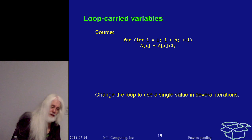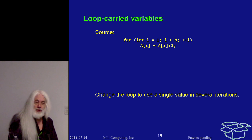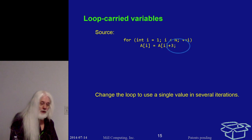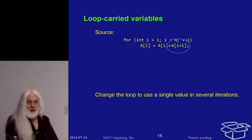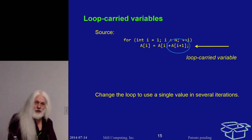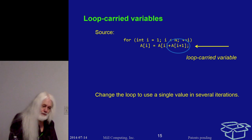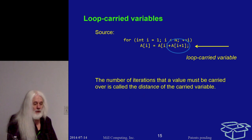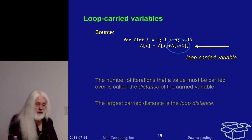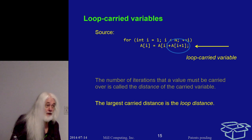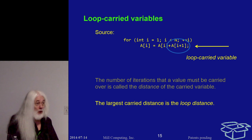However, life gets more complicated if a value gets used over multiple iterations. If a value 'a sub i' is used in more than one iteration, that is called a loop-carried variable. The number of iterations that a value has to be carried over is called the distance of that value, and the maximal loop-carried distance is the distance for the whole loop — terminology that will crop up later.